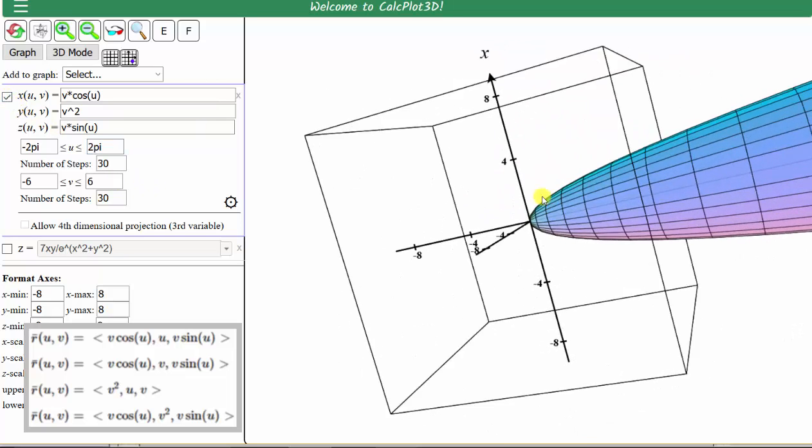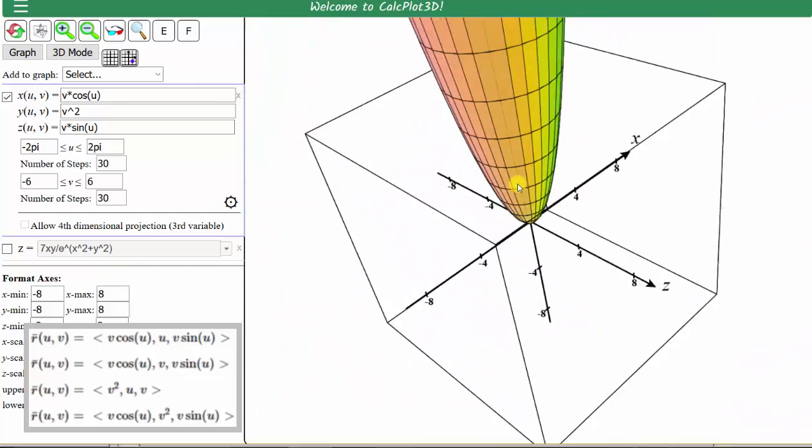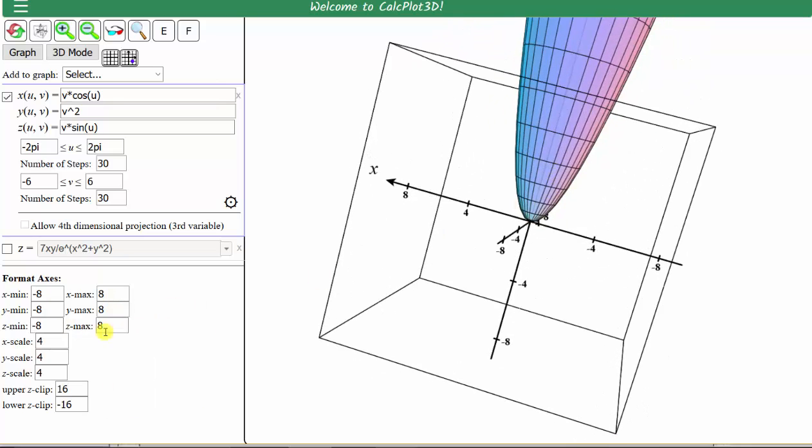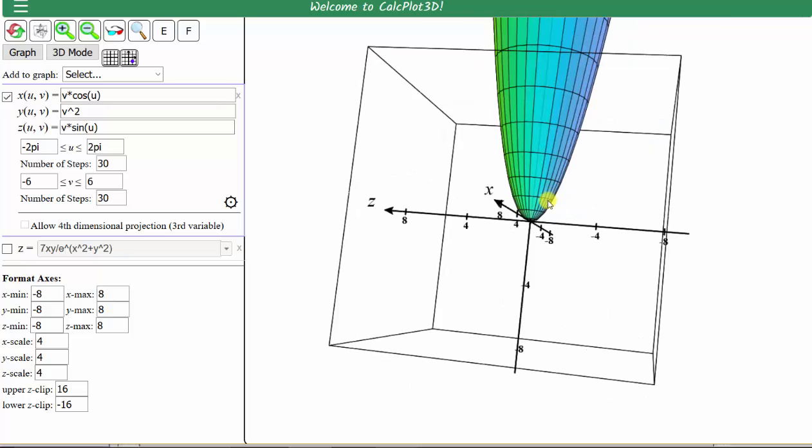And notice here we have a paraboloid. If we want to, we can adjust individual axes by using the settings down here. I hope you found this helpful.